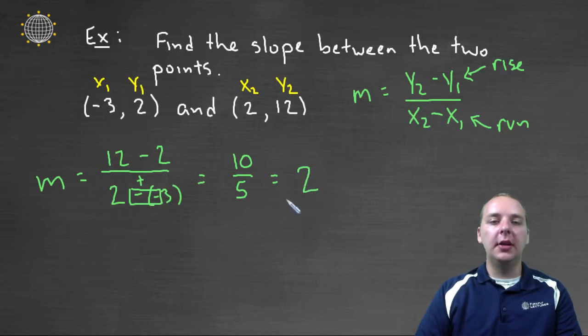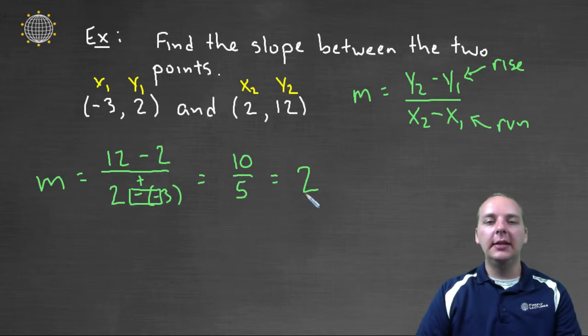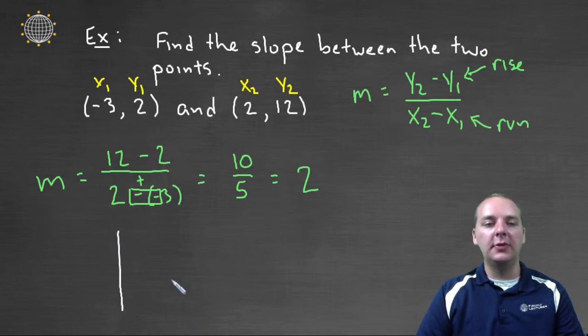Now we got kind of fortunate here, the slope doesn't always have to be an integer value, but in this case it was. So the slope, the amount of tilt between these two points, is positive two. Now one thing that tells me, because this answer is positive, is that we must be going up from one point to another, and not downwards.